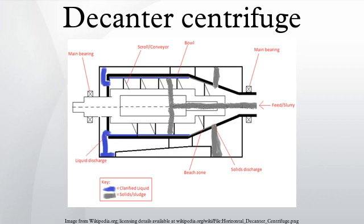The main application of decanter centrifuges is to separate large amounts of solids from liquids on a continuous basis. They are also used to wash and dry various solids in industry, such as polystyrene beads, clarify liquids and concentrate solids. Table 1.0 displays various examples of the utilization of decanter centrifuges in various industries.